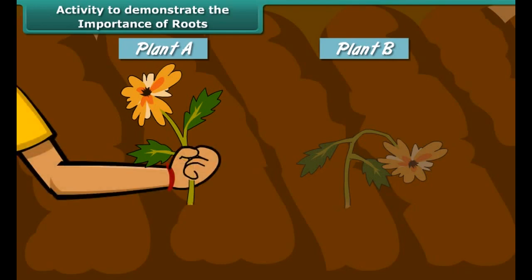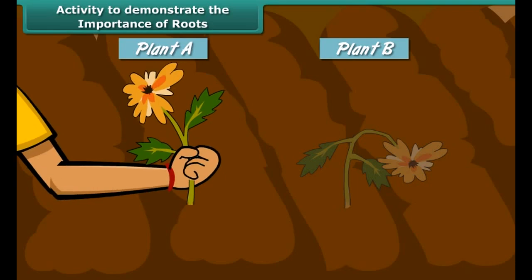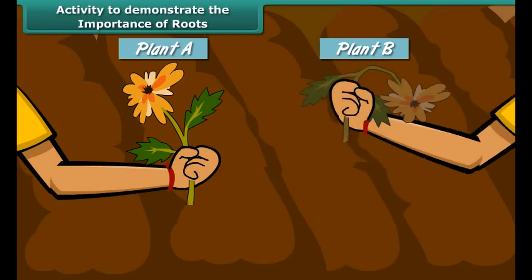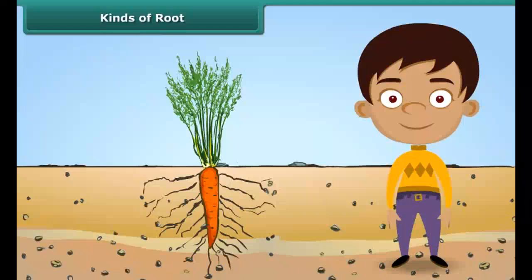Now try pulling the two plants out from the soil. Plant A is firmly attached to the soil because of its roots, so it is difficult to pull it out. However, plant B, which has no roots, comes out easily. This shows that roots anchor plants firmly in the soil.